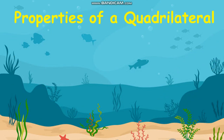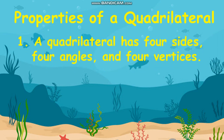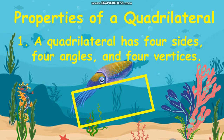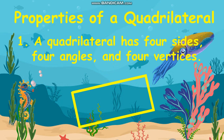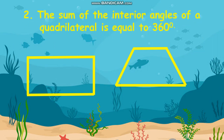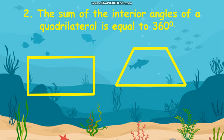Before we get into the kinds of quadrilaterals, let's first find out their properties. First, a quadrilateral has four sides, four angles, and four vertices. Next, the sum of the interior angles of a quadrilateral is equal to 360 degrees.